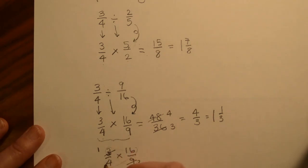And in this, we have a 4. So 4 goes into 4 once. 4 goes into 16 four times. And then it becomes 4/3, which is 1 and 1/3.